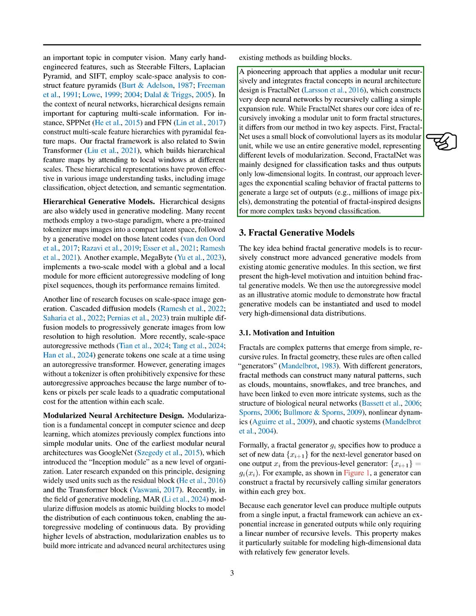A notable approach that applies modular units recursively is Fractal Net, which builds deep neural networks using a simple expansion rule. While Fractal Net shares our idea of using modular units to create fractal structures, it differs in two main ways. First, Fractal Net uses small convolutional layers as its modular unit, while we utilize entire generative models, representing a different level of modularization. Second, Fractal Net is primarily designed for classification tasks producing low-dimensional outputs, whereas our approach leverages fractal patterns to generate millions of image pixels, showcasing the potential of fractal designs for more complex tasks.